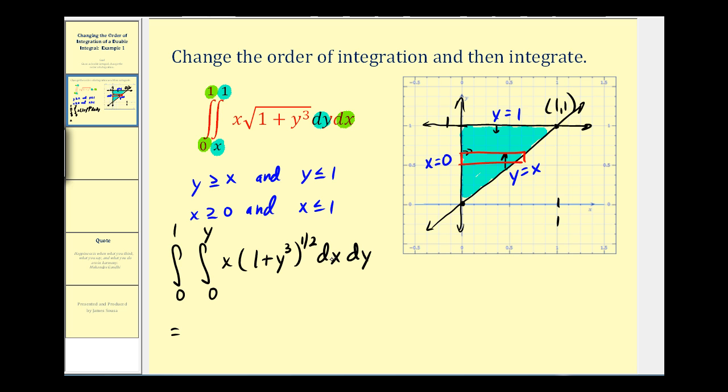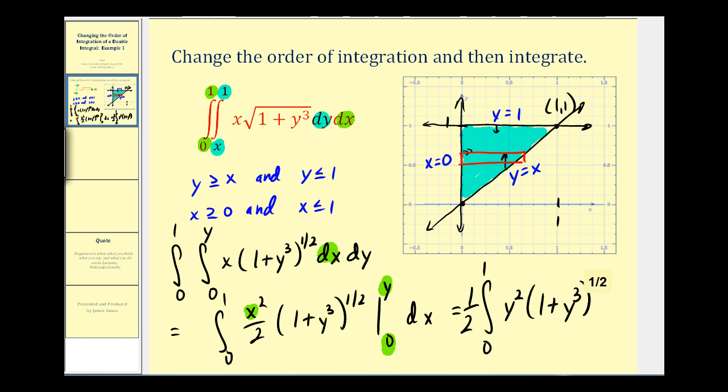So now we integrate this with respect to x. Because y is treated as a constant, so this ends up just being x squared over two times the quantity (1 + y³) to the one-half. And because we integrate with respect to x, we're going to replace x with y and zero. So let's go ahead and factor this one-half out. And then when x is equal to y, we'll have y² times the quantity (1 + y³) to the one-half, dy. Let's go ahead and finish this on the next slide.